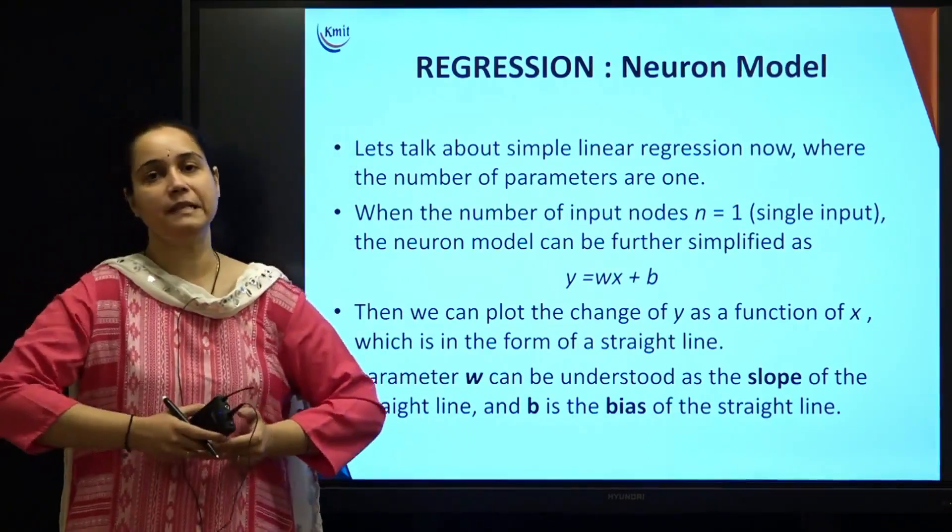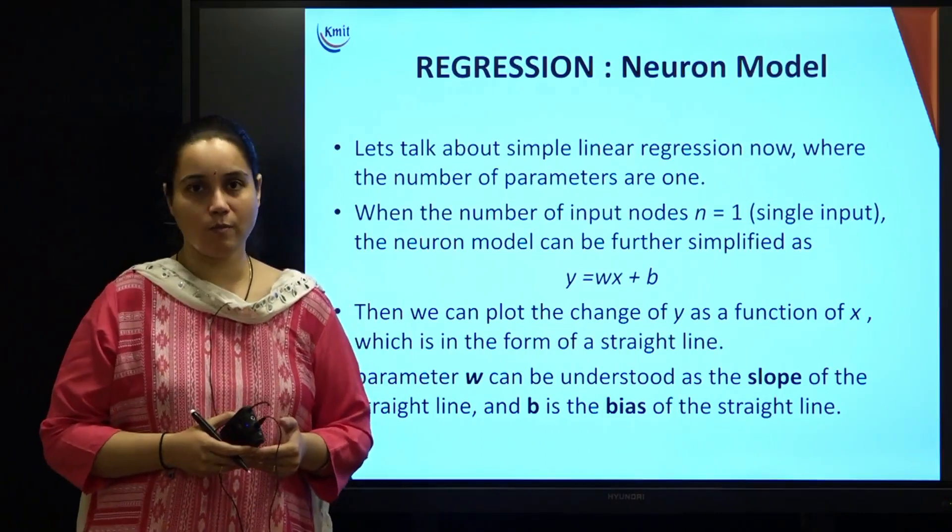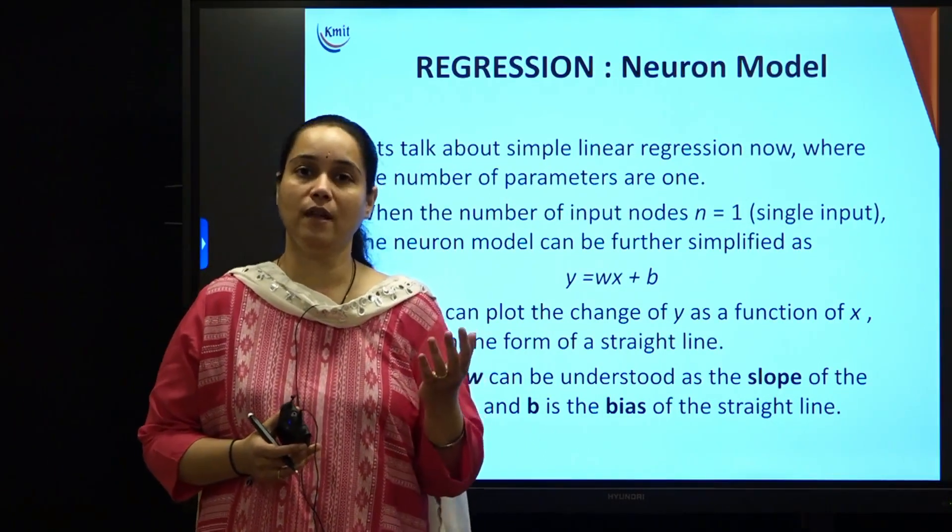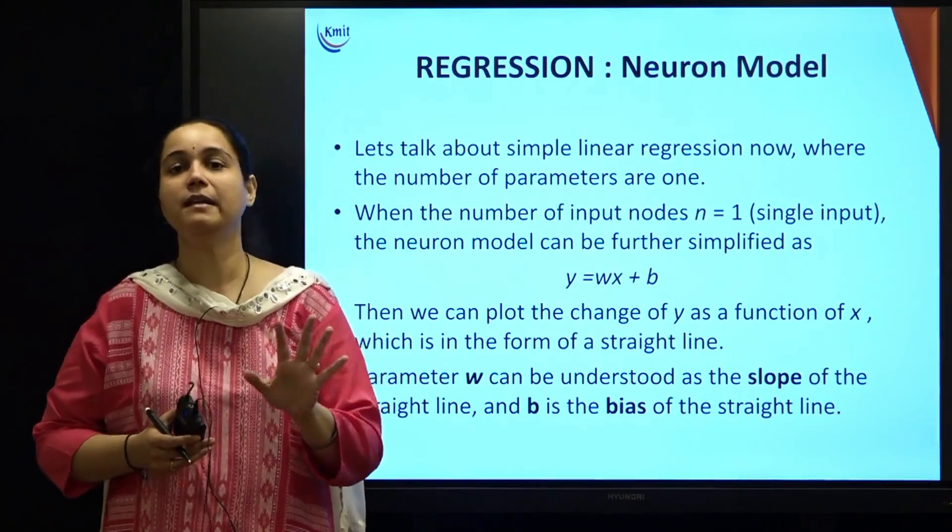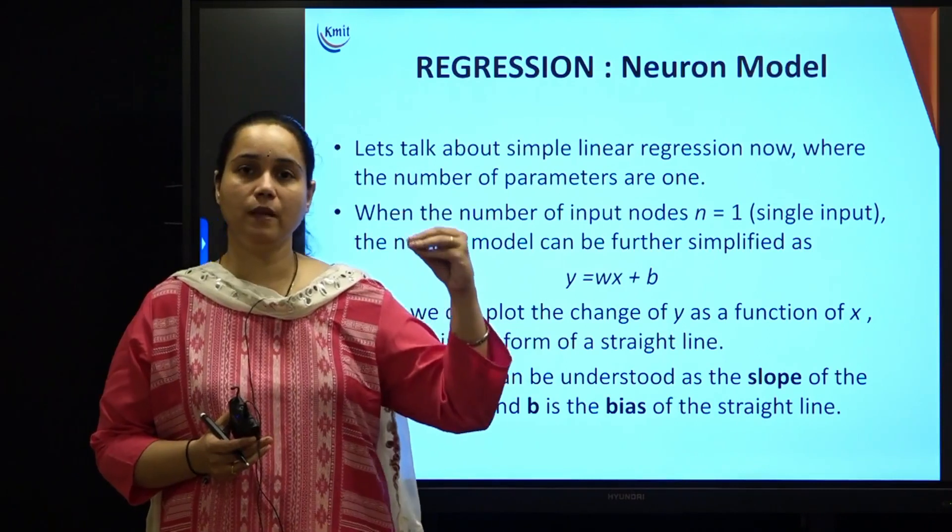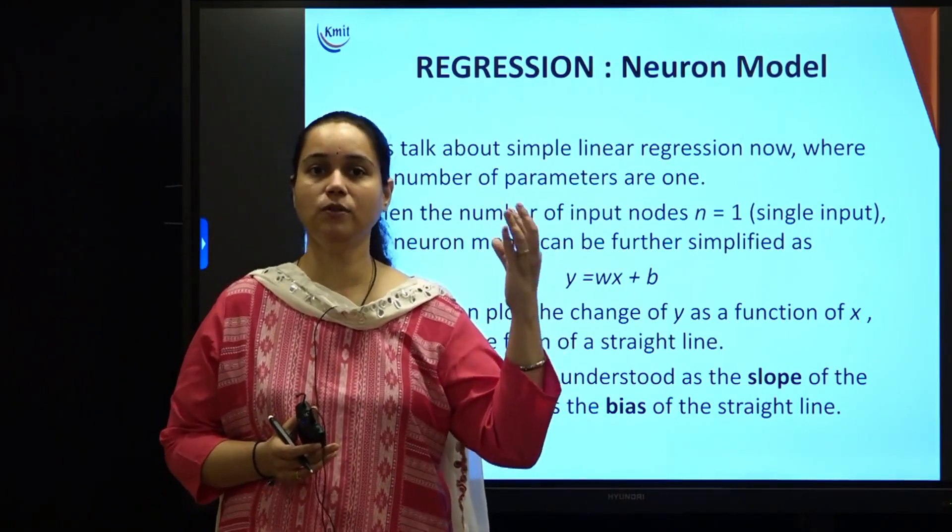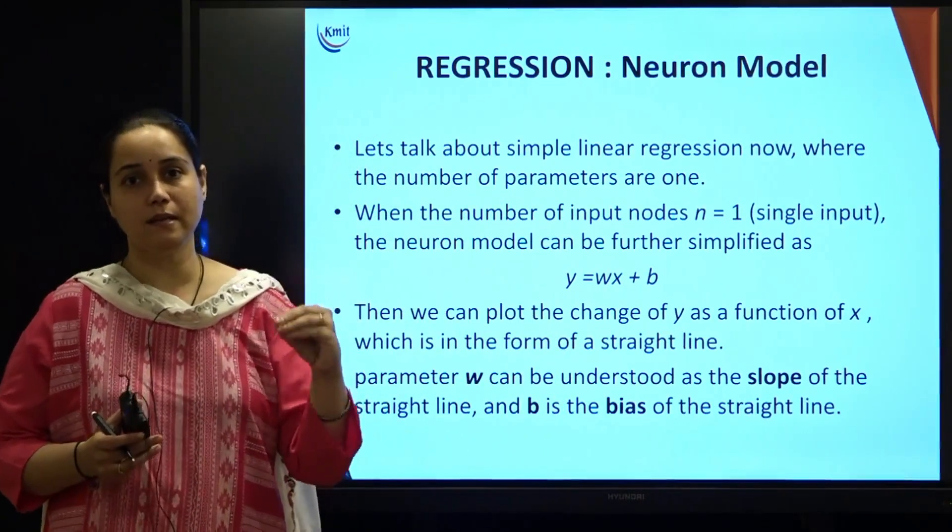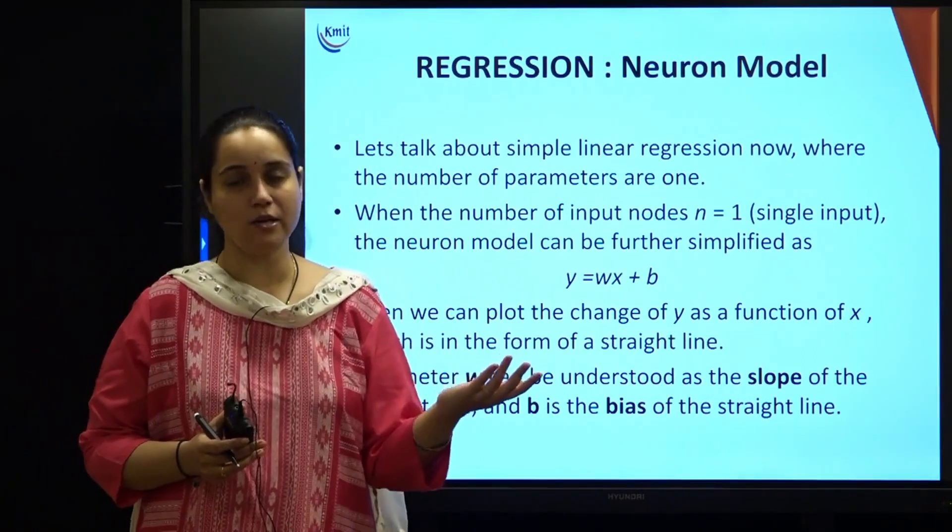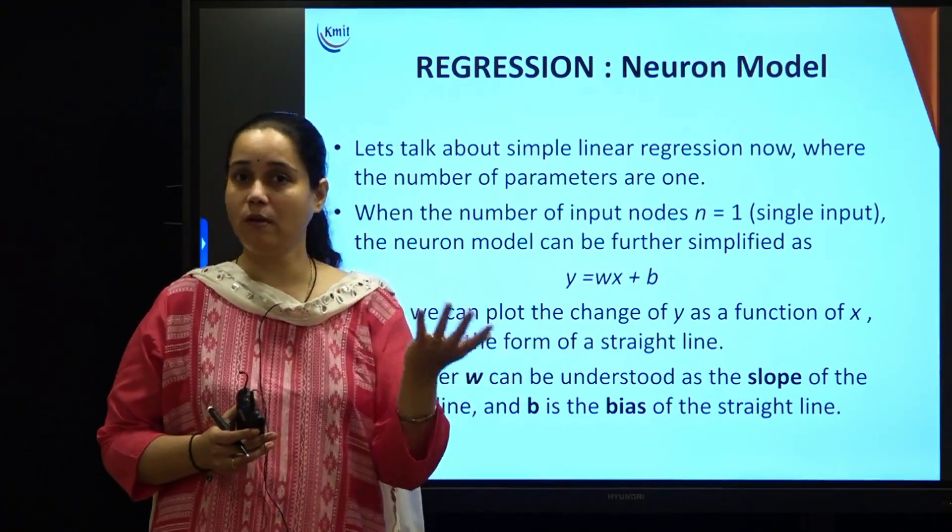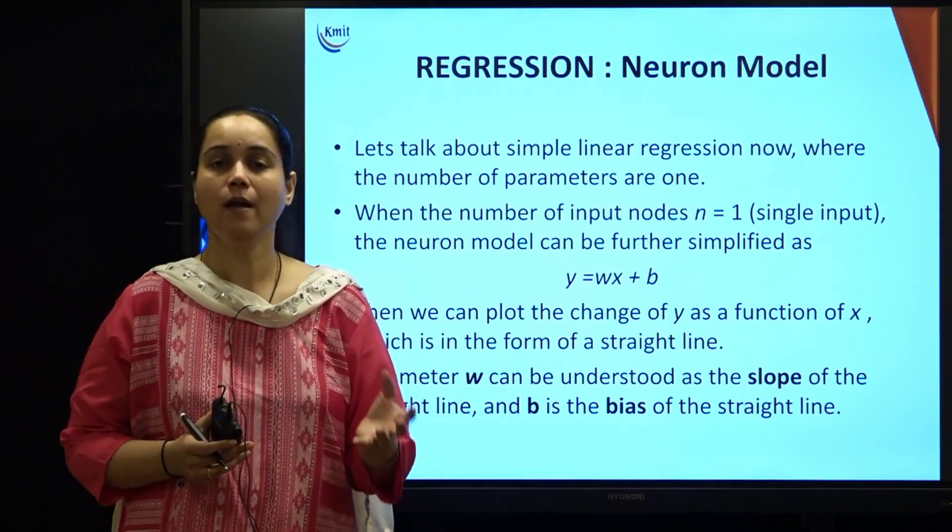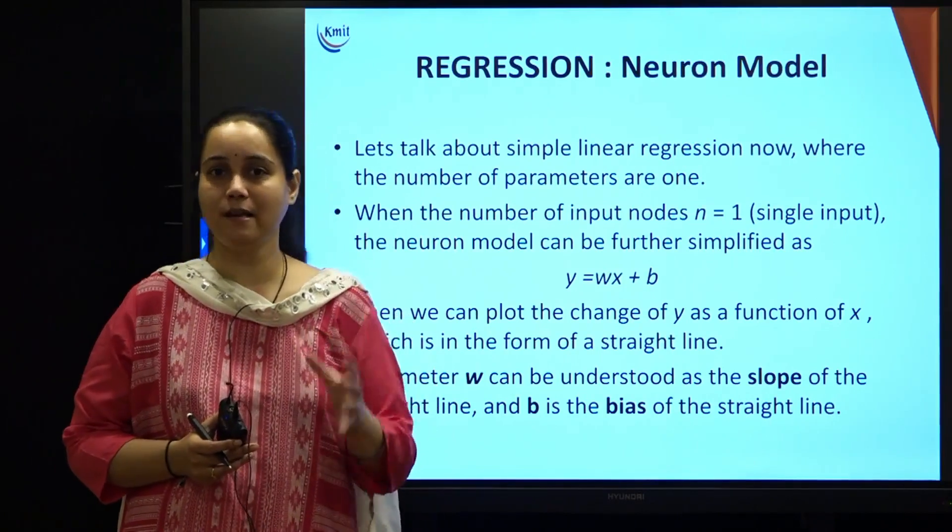Already you know linear regression is a linear model. When you call it as a linear model, the input and output are linearly dependent on each other. That means the increase or decrease in the input causes an equivalent increase or decrease in the output. There is no non-linear relationship between them.